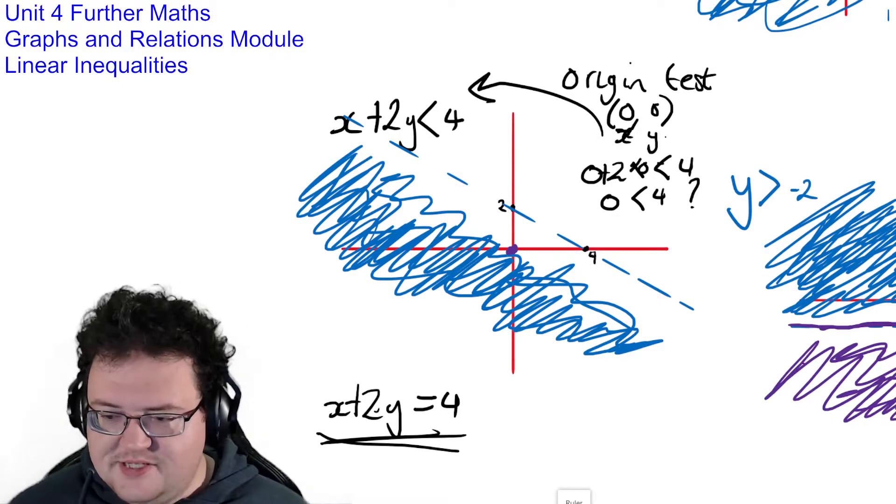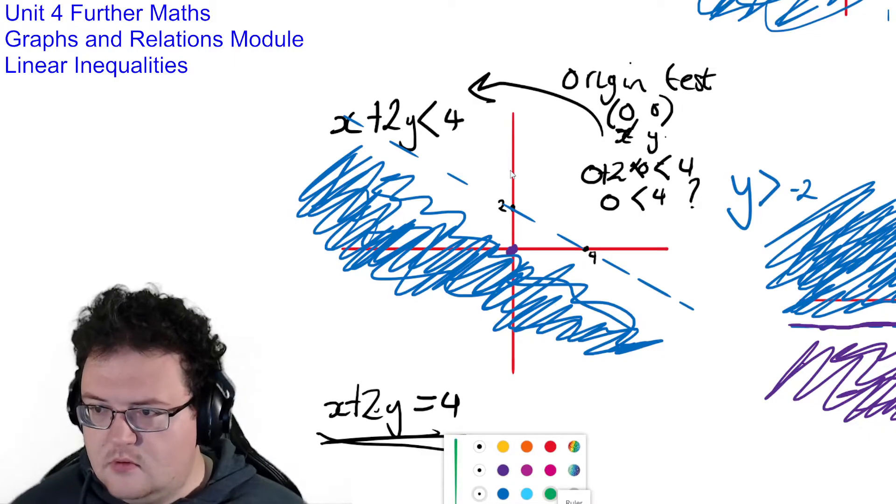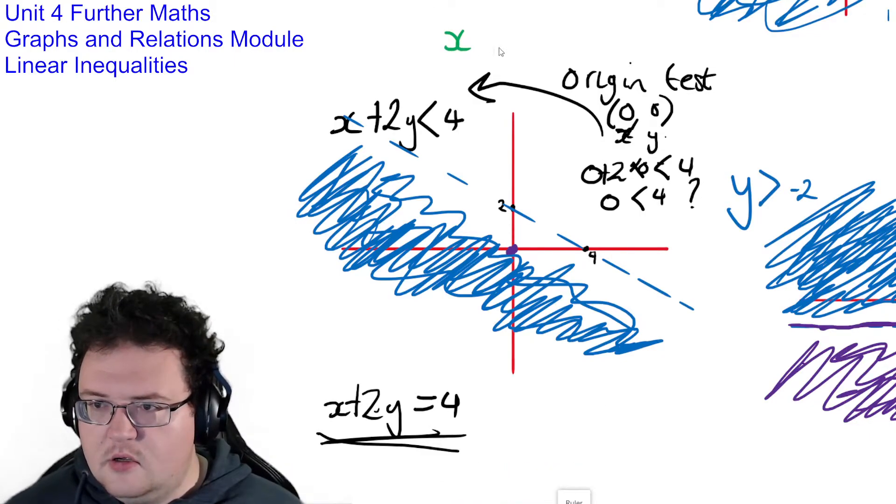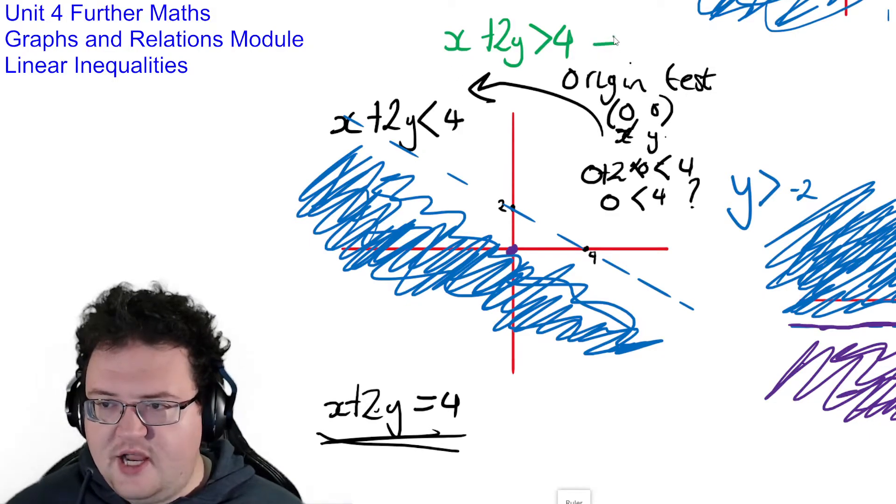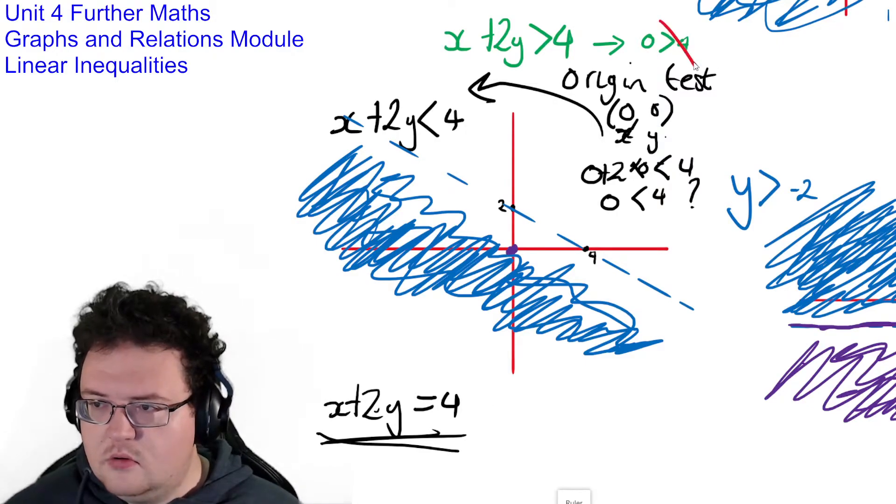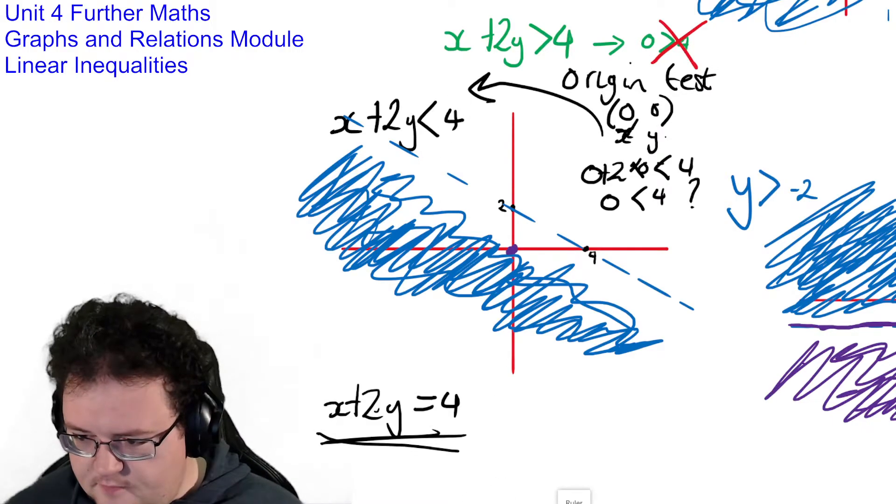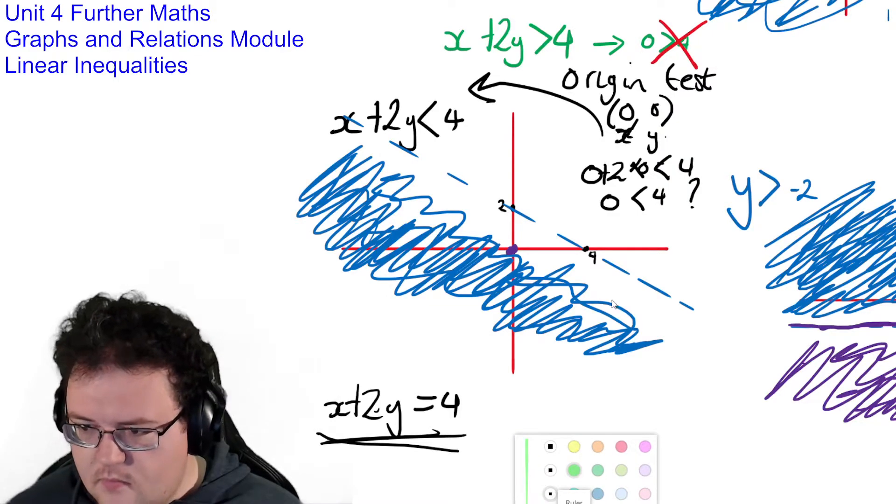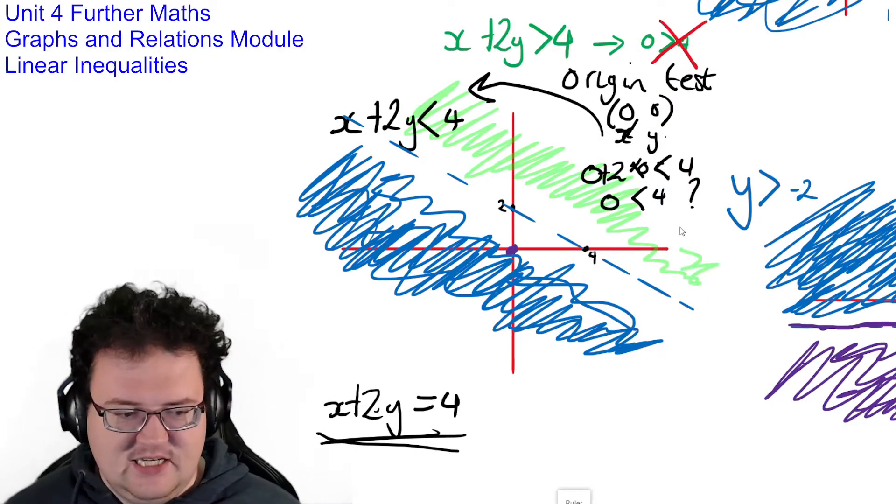If the line was the other way around, such as, what if it was x plus 2y is greater than 4? If I put the origin test into here, I would end up with a statement that 0 is greater than 4, which is flagrantly wrong. And in that case, I would shade the side of my line that doesn't include 0, 0.